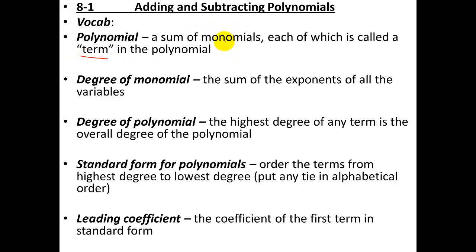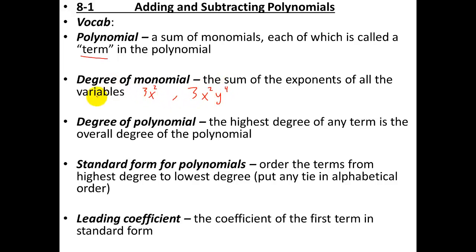We learned previously what a monomial is — that's a combination of numbers and variables multiplied or divided that has no variables in the denominator and no negative exponents. The degree of a monomial is the sum of all the exponents of the variables. For example, 3x squared has a degree of 2, but 3x squared y to the fourth has a degree of 6 because the combined exponent of all the variables is 6. For a monomial, you just look at the combined exponent of the variables.